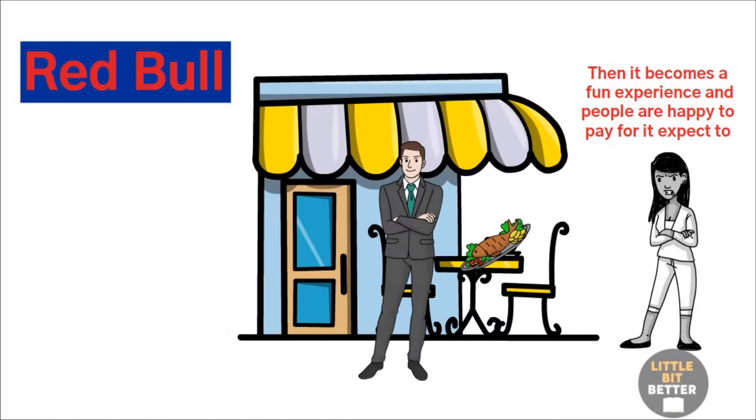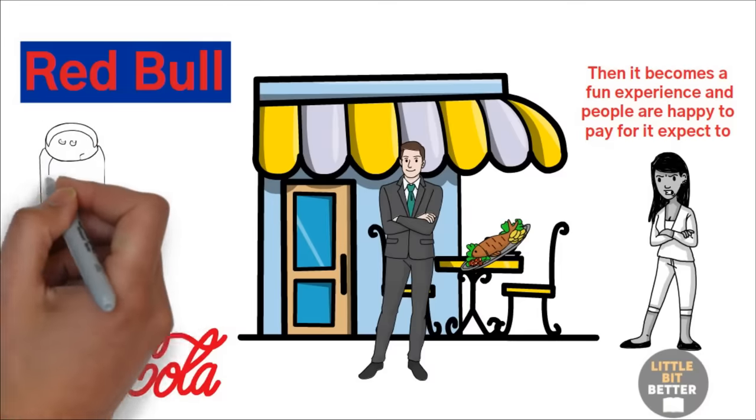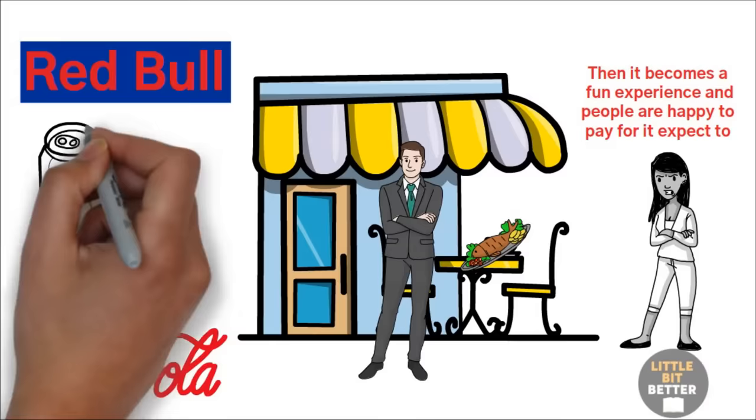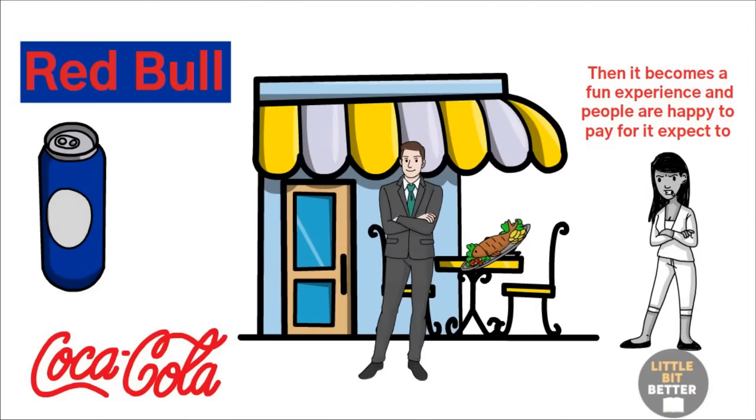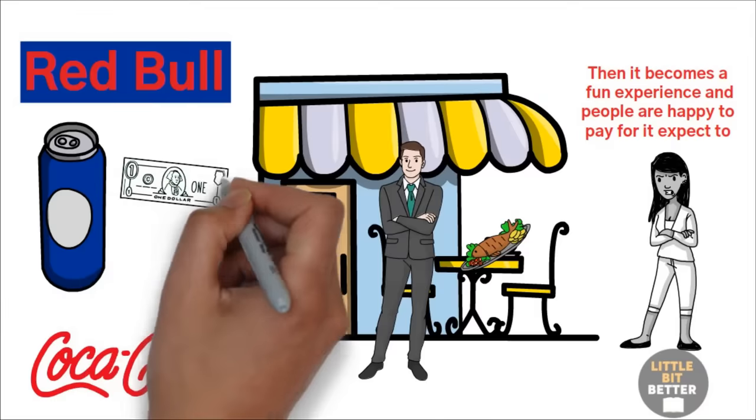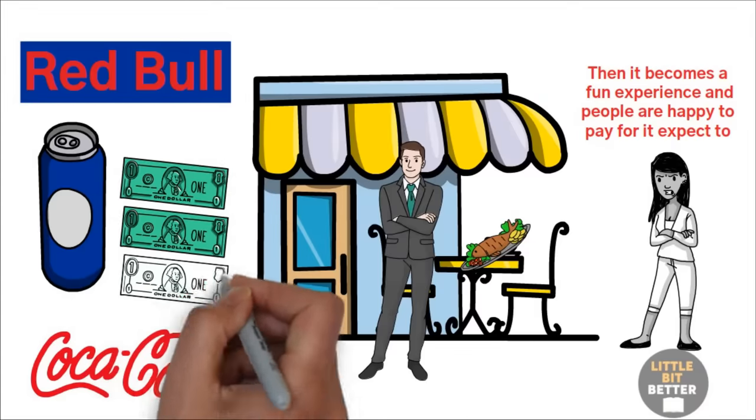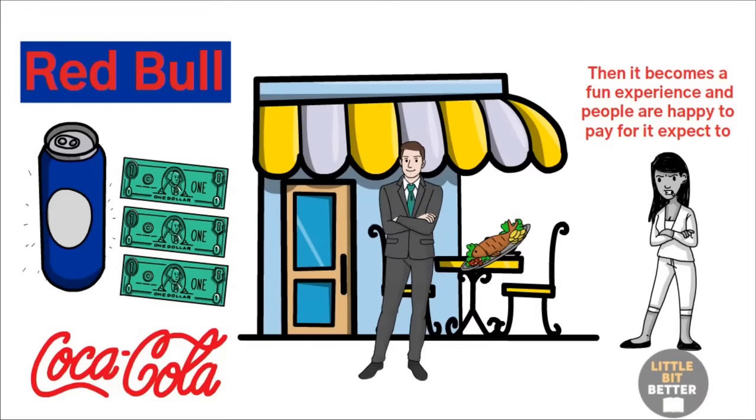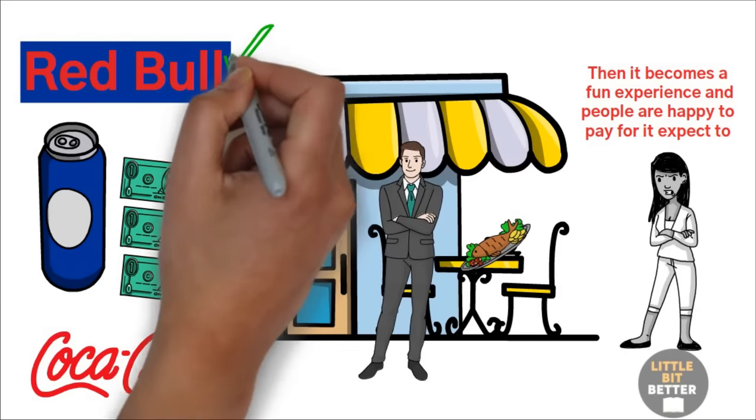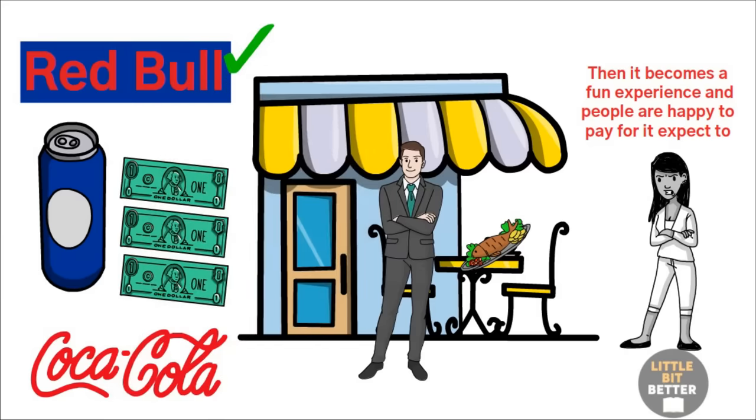Take Red Bull, for example. It is the opposite of Coca-Cola. It tastes strange, comes in a tiny can, and costs several times more than cola. Everybody would laugh at you if you told them that you were going to develop a drink that you would make taste strange on purpose, charge two to three times more for it, but sell it in a tiny can so that people could get very little drink for their money. But that is Red Bull, and it is successful.